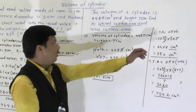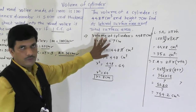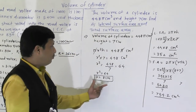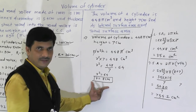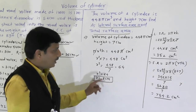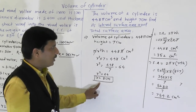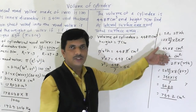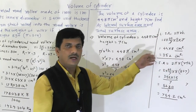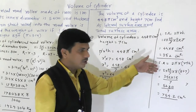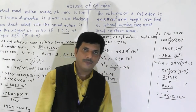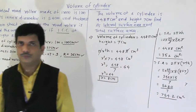So in this problem, volume was given. With the help of volume we found the radius, and with the help of the radius we found the lateral surface area and total surface area of the cylinder. Thank you.